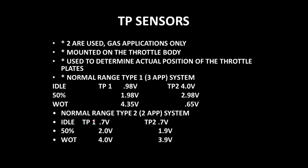The TP sensors are mounted on the throttle body and provide input back to the processors to tell us if the command for the TAC motor is correct. On a Type 1 three-APP sensor system, at idle TP number 1 will typically read about 0.98 volts; as you step on the gas pedal, that voltage goes up. TP number 2 conversely goes backwards — at idle it's about 4 volts, and as you step on the gas pedal the voltage drops. We use that cross-voltage correlation to tell us if we have a diagnostic issue with the sensors. That's the reason they operate backwards of each other — the voltages were run in opposite directions to create a diagnostic process for identifying TP sensor problems.